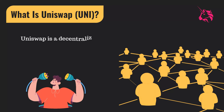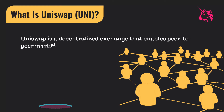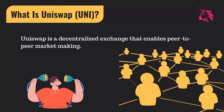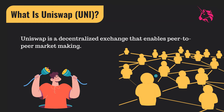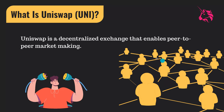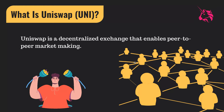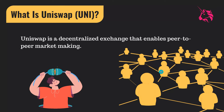So what is Uniswap exactly? Uniswap is a decentralized exchange that enables peer-to-peer market making. The Uniswap smart contract is deployed on the Ethereum blockchain. Every single individual represents a node on that blockchain. When you connect with the Ethereum blockchain, you represent yourself as a node, and you will have all the data and share your data with the network.